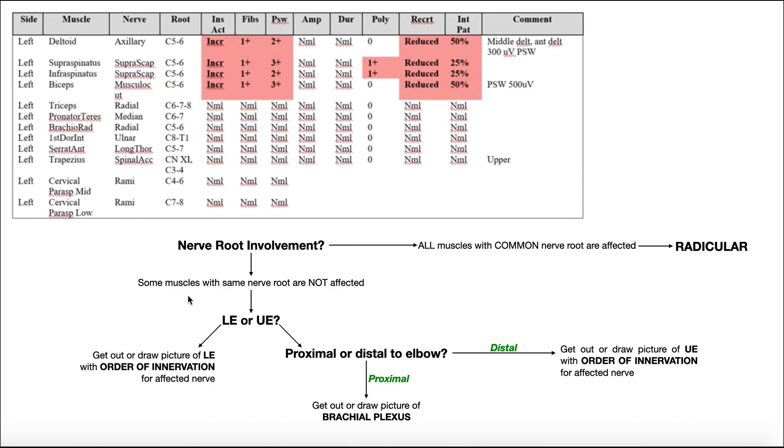The fact that you have some muscles with that same nerve root that are not affected rules down that it is a radiculopathy and that the damage is at the nerve root level. We could make the same argument with the C6 nerve root. Again, these first four muscles are all adversely affected, and they all have C6 as a contributor, but again,